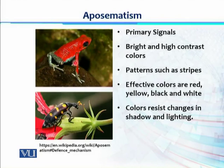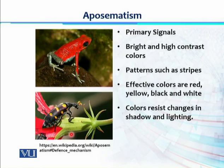An example of a primary signal is the poisonous dart frog, which has very bright colors containing different patterns. Similarly, a beetle has very bright color markings and patterns on its body. These colors are very clear signals that these animals are dangerous or aggressive, which threatens the predator. The most effective warning colors are red, yellow, black, and white, because these are easily identified by predators.